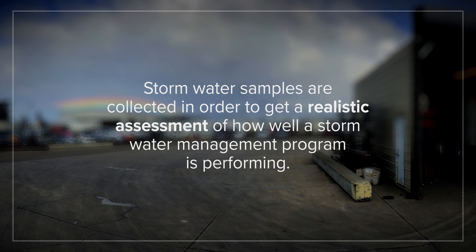When, where, and how a sample is collected can greatly impact how representative it is. Be careful about run-on from neighboring sites and from non-industrial areas. Most of the time, the location for collecting a representative sample will be determined ahead of time by the QISP, but in the field things can change. High water levels can make the original sampling location unsafe, or water from a neighbor's property may back up into your discharge point. You must be able to adapt, come up with a plan B, and still collect a representative sample. Stormwater samples are collected to get a realistic assessment of how well a stormwater management program is performing.